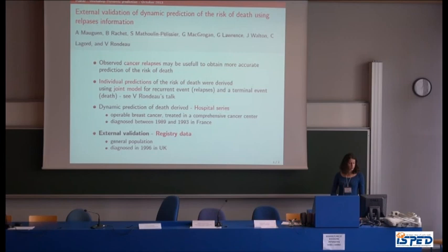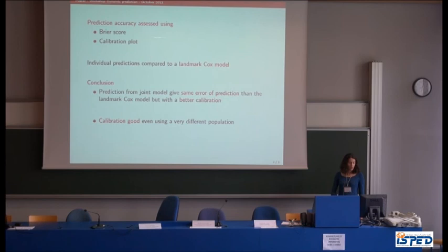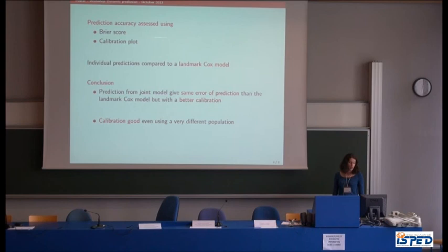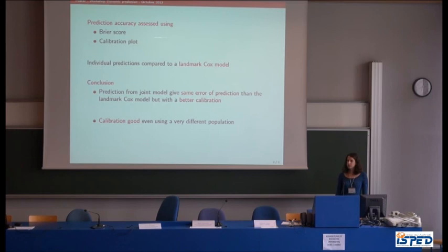The poster presents the external validation results using a very different dataset: registry data from the general population with no selection, with patients diagnosed in 1996 in the UK. Prediction accuracy was assessed using Brier score and calibration plots, compared against the Kaplan-Meier model. The conclusion was that the prediction from the joint model has a similar error of prediction to the Kaplan-Meier model but with slightly better calibration, especially for high-risk patients, and overall good calibration even using a very different population.